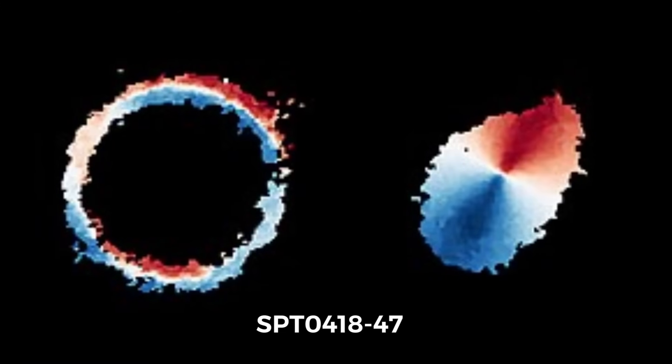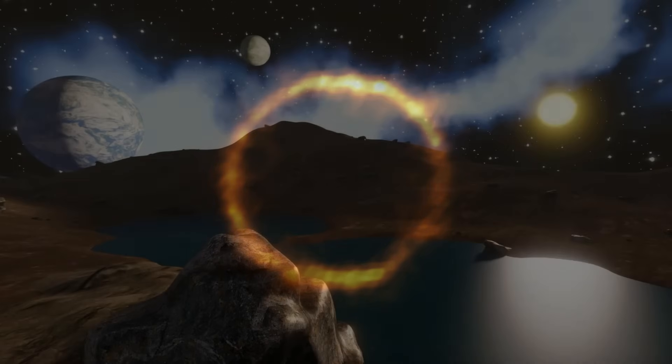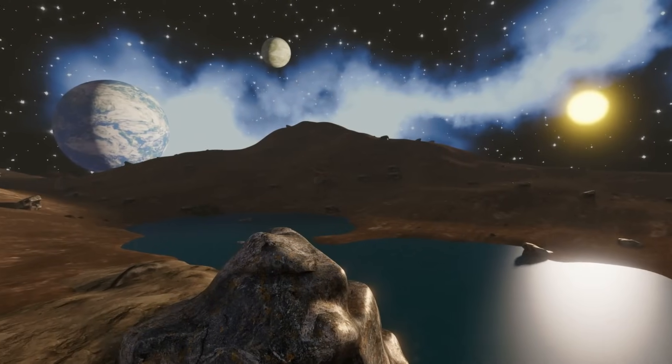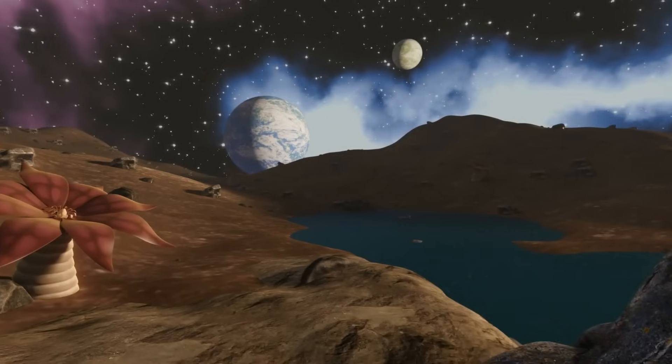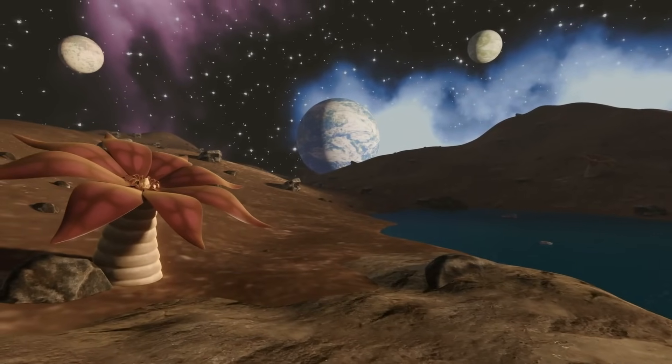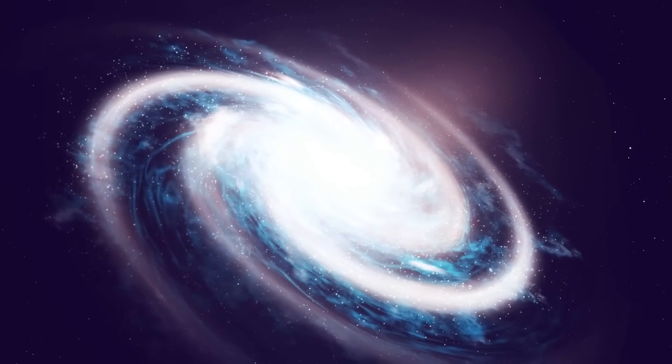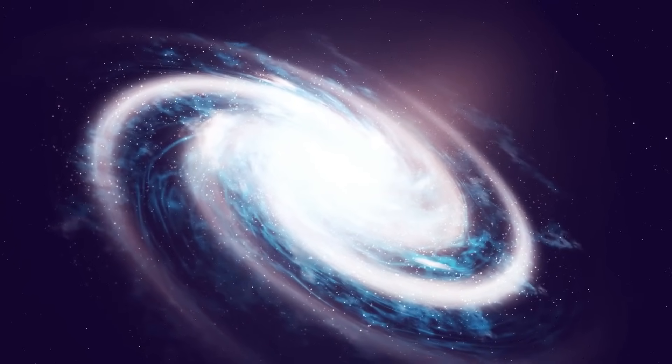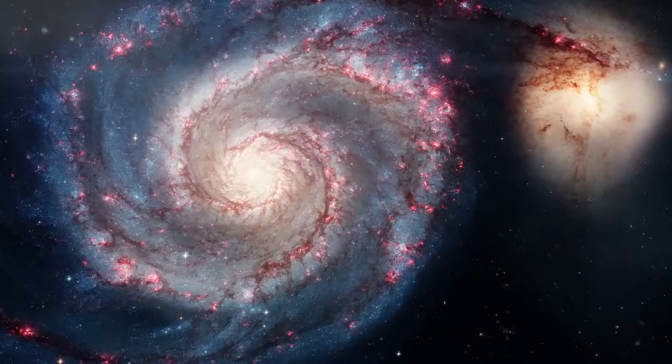The galaxy candidate SPT0418-47 is another interesting find that questions what we thought we knew about how galaxies were structured in the early universe. Seeing this galaxy with such a clear shape so soon after the big bang is like discovering a culture with complex buildings and a society that is much older than any archaeologist could have imagined. And it makes scientists rethink their ideas about how fast galaxies could organize themselves and form the traits we see in many of them today, like spiral arms.